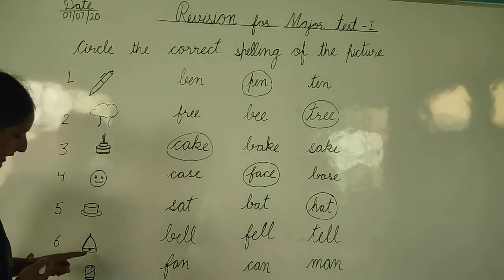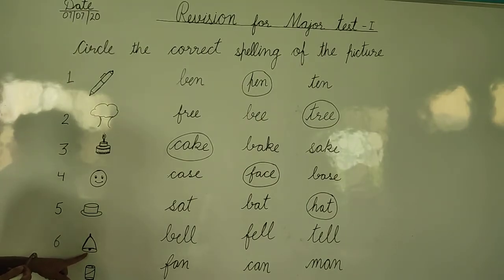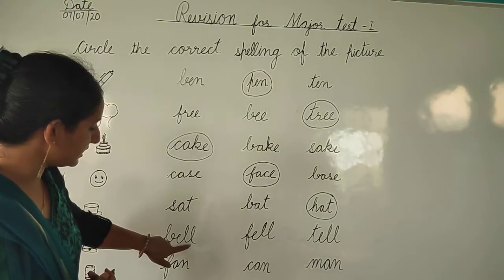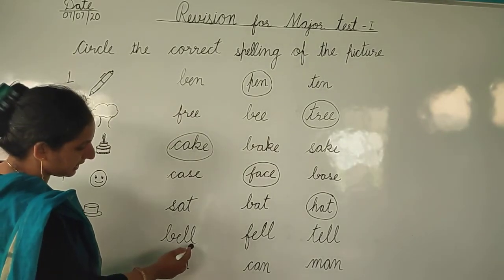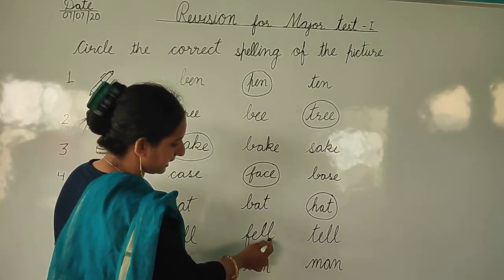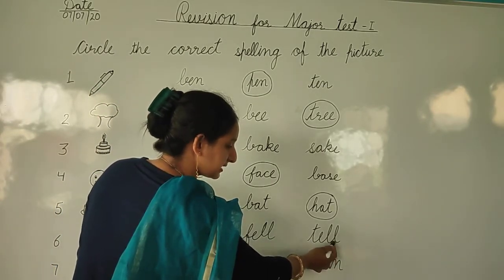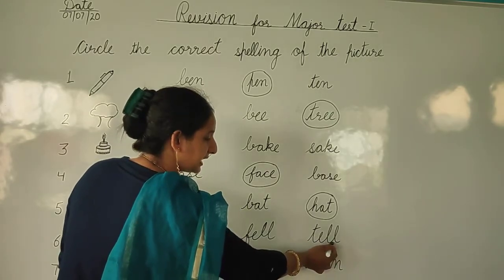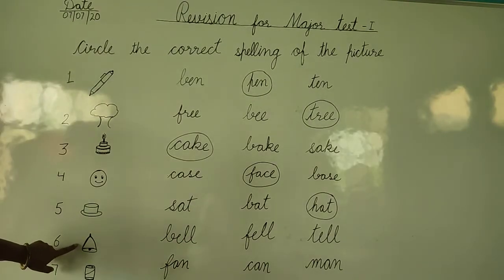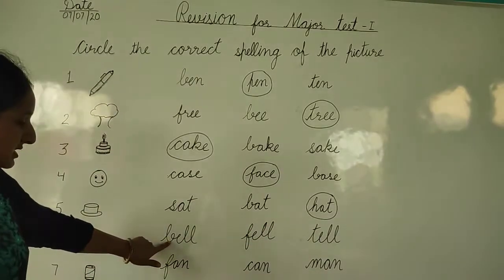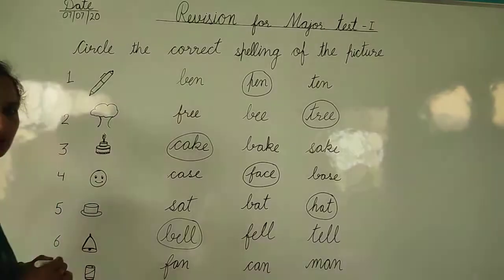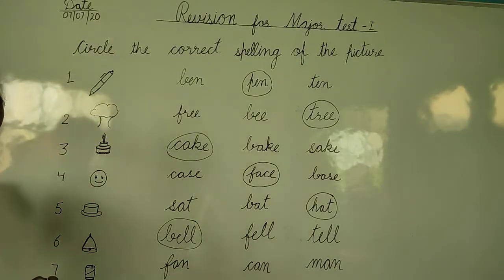Next — look at this picture, what is this? This is a bell. Now read the spellings: B-E-W-M — Bell; F-E-W-L — Fell; T-E-W-L — Tell. Bell, fell, tell. Which is the spelling of bell? Here — B-E-W-N — Bell. So now we will make a circle on the spelling of bell.